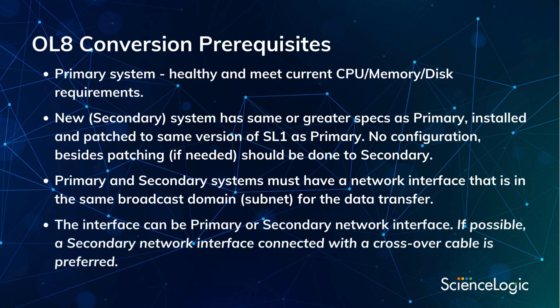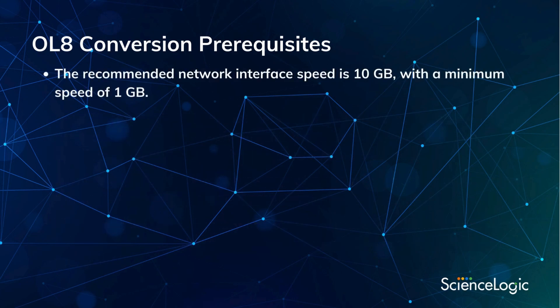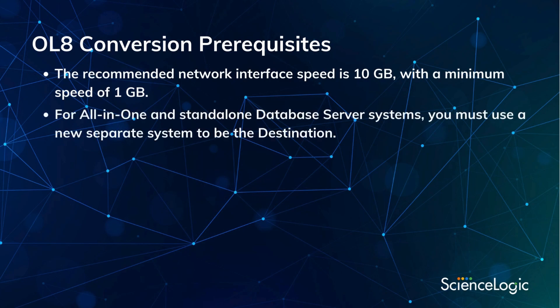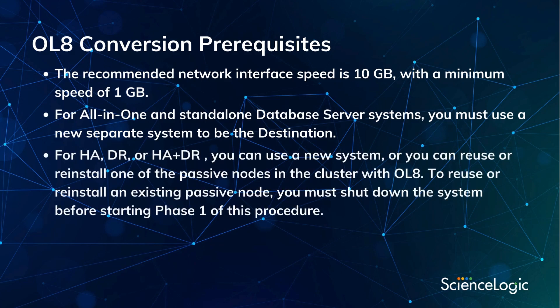This interface can be the primary network interface or a secondary one. If possible, a secondary network interface connected with a crossover cable is preferred. The recommended network interface speed is 10 gigs with a minimum speed of 1 gig. For all-in-one and stand-alone database server systems, you must use a new separate system to be the destination. For HA, DR, or HA plus DR, you can use a new system, or you can reuse or reinstall one of the passive nodes in the cluster with Oracle Linux 8.